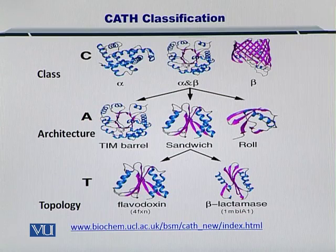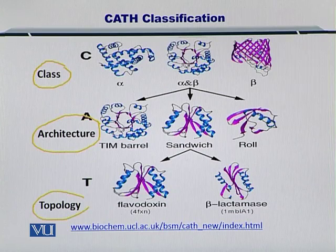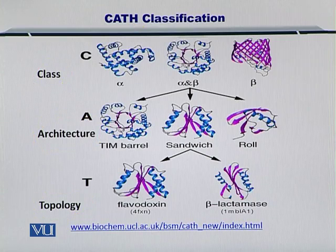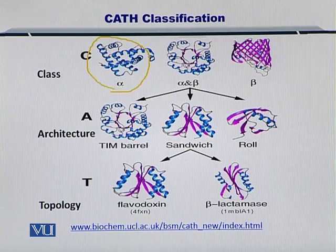CATH is essentially an acronym built from Class, Architecture, Topology, and Homology. If you want to classify proteins based on their class, then you can look at the domains that exist within that protein.